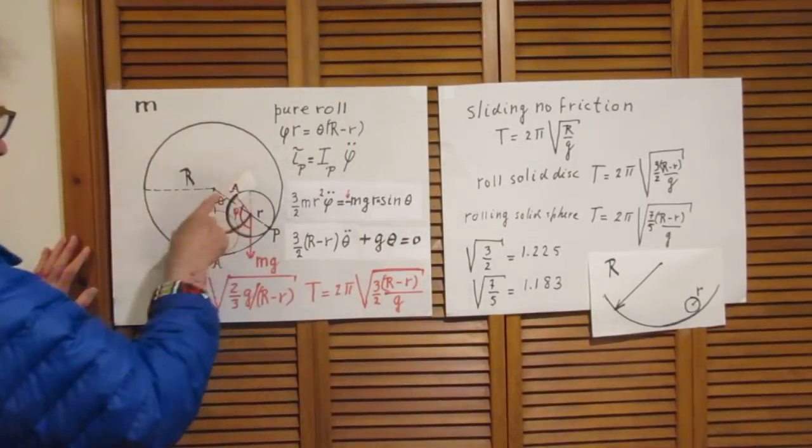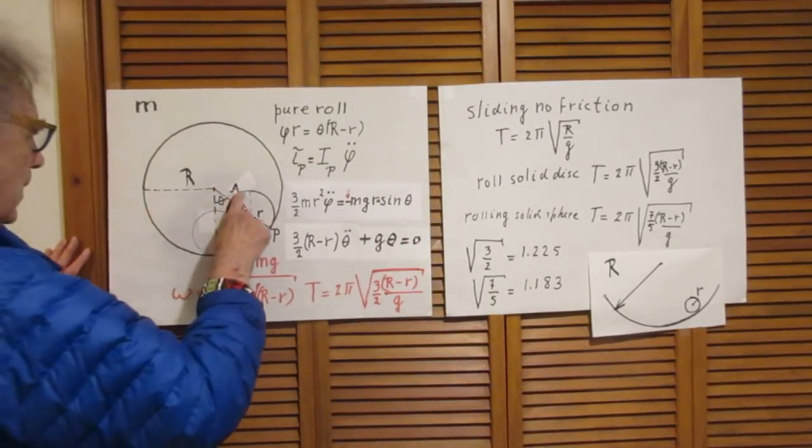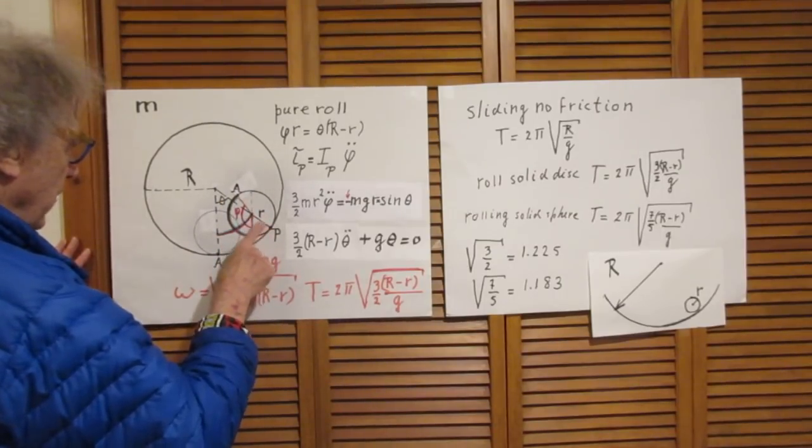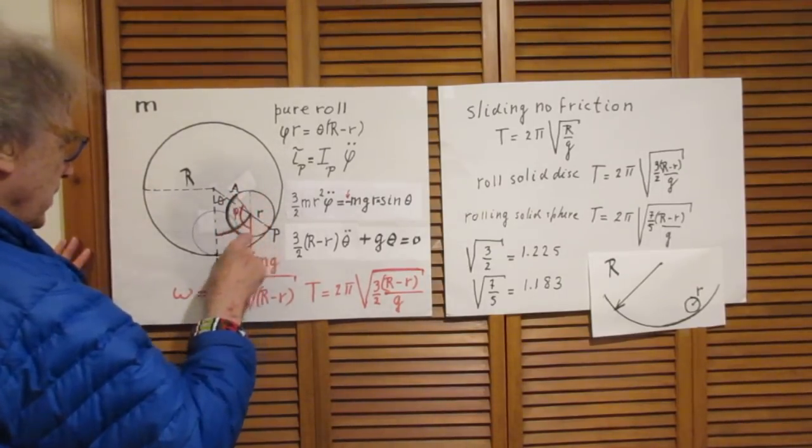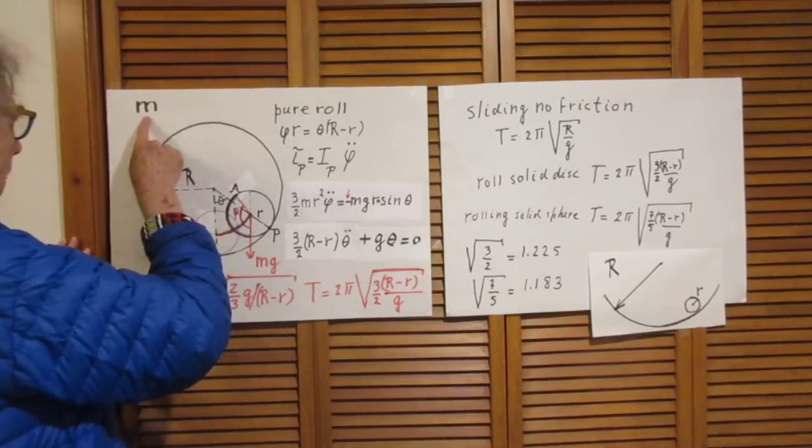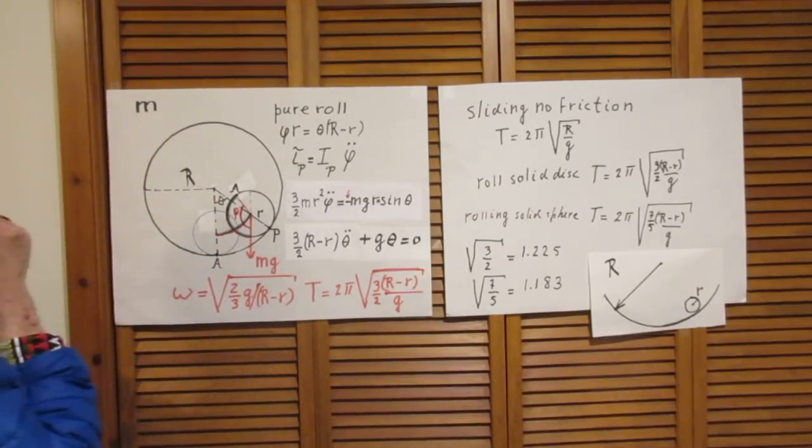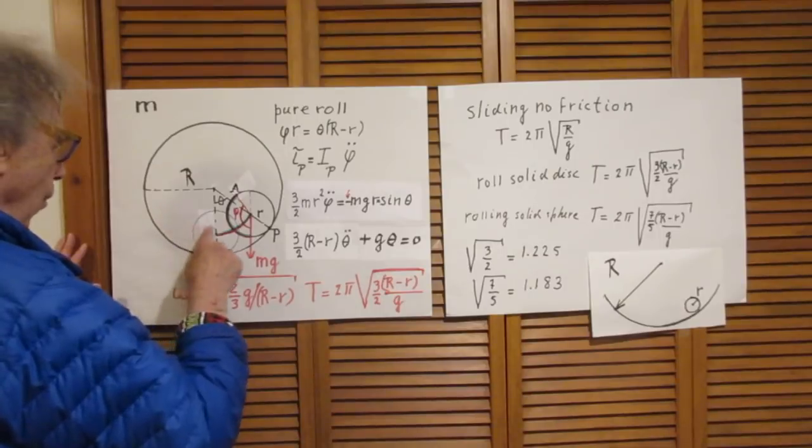Here is the hollow cylinder, radius capital R. Here is the disk with radius small r. The disk is solid and the disk has mass m.